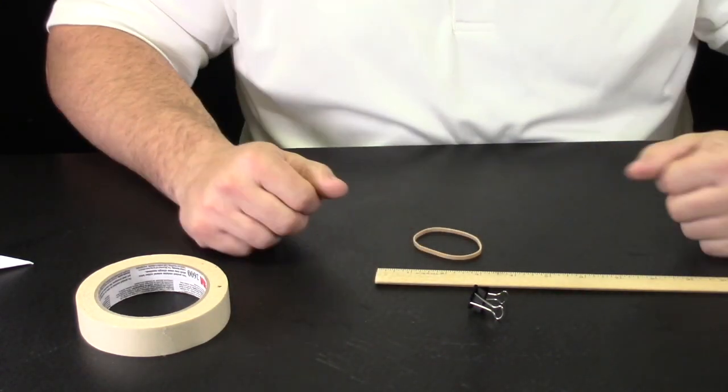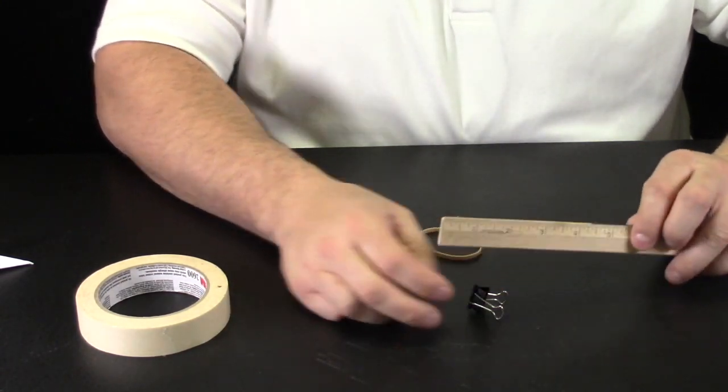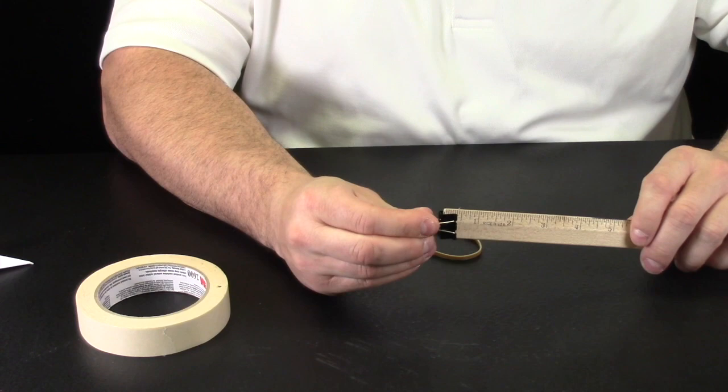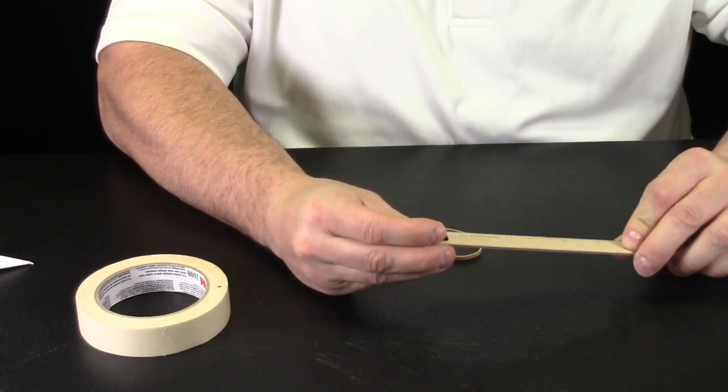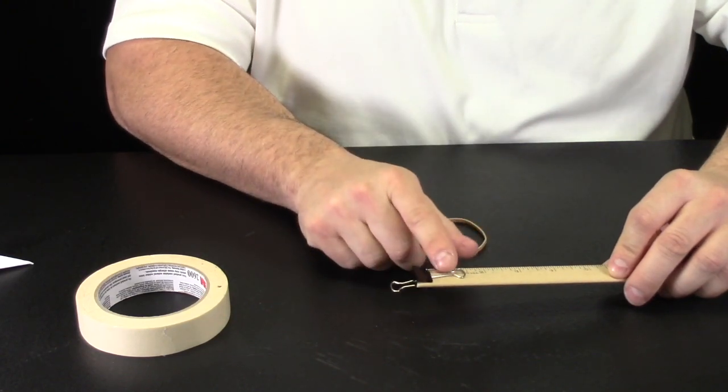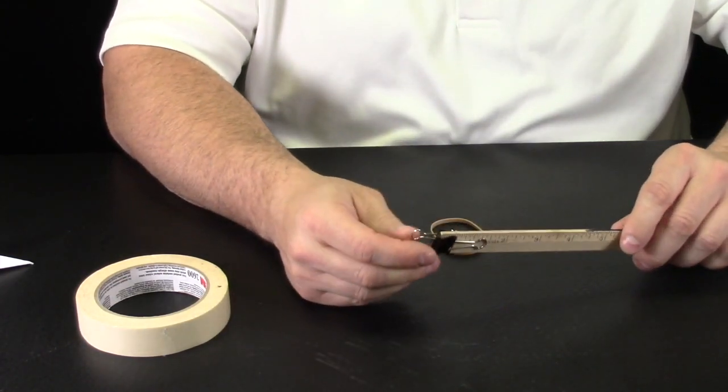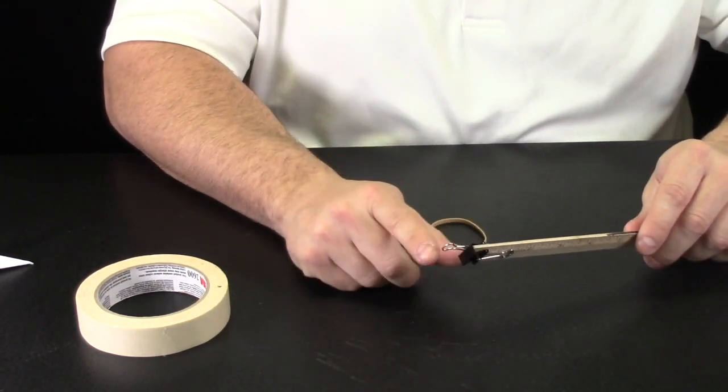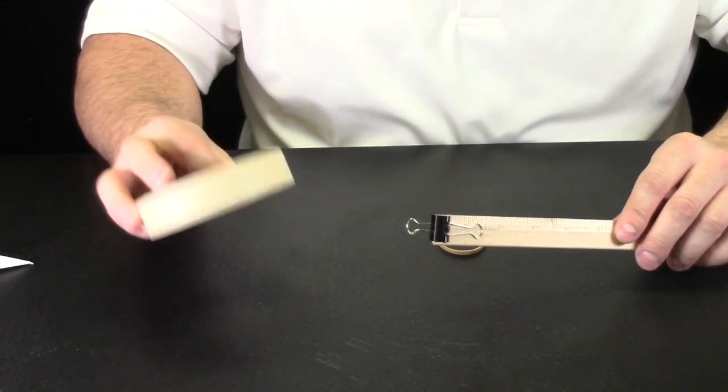We've zoomed in so you can see how we're going to make our launcher. I'm going to start by clipping the binder clip onto the end of the ruler, making sure it's centered, and then I'm going to flip down one of the arms. That arm is going to allow me to tape around that binder clip and still have another arm that's going to allow me to attach the rubber band. So let's tape this on.